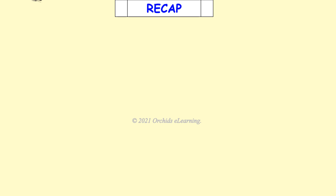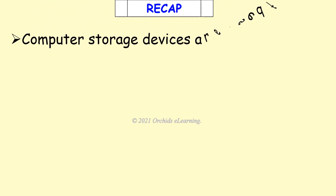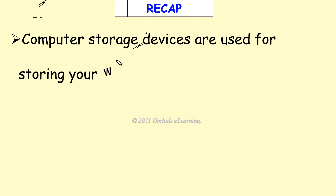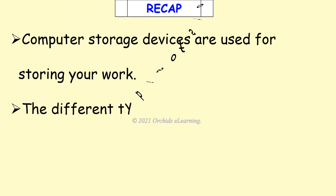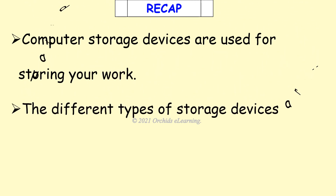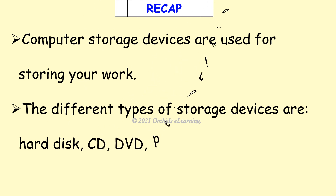Recap: Computer storage devices are used for storing your work. The different types of storage devices are hard disk, CD, DVD, pen drive, and memory card.